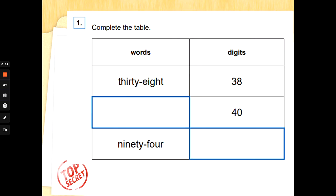Number one: complete the table. So we've got the number in words and then we've got the number in digits. So they've written 38 and then they've written the number in digits 38.